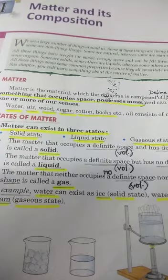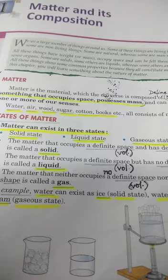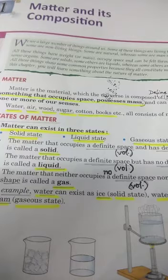What is matter? Anything that occupies space and has mass is called matter. Some examples of matter are water, air, wood, sugar, cotton, etc.